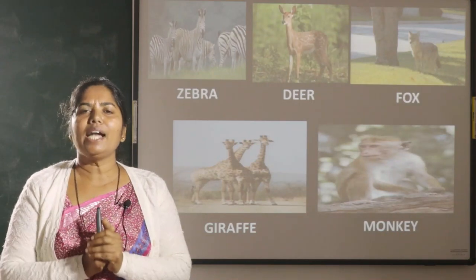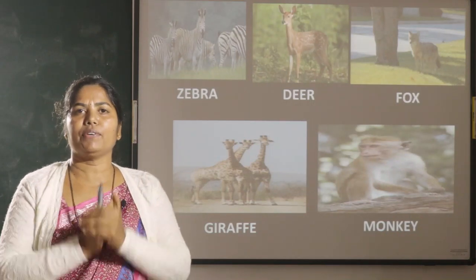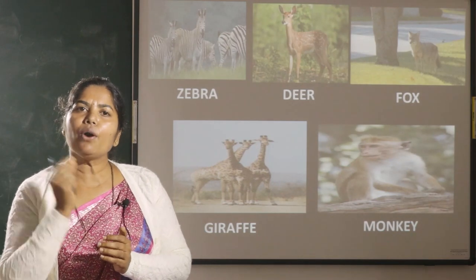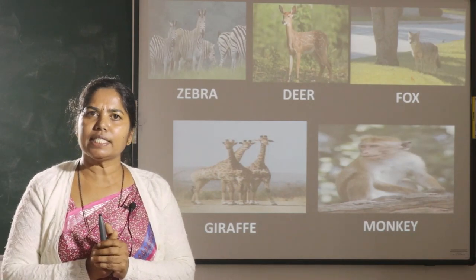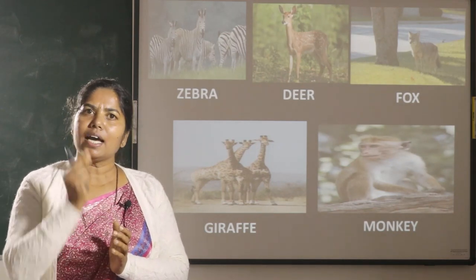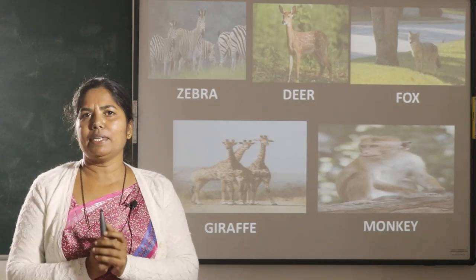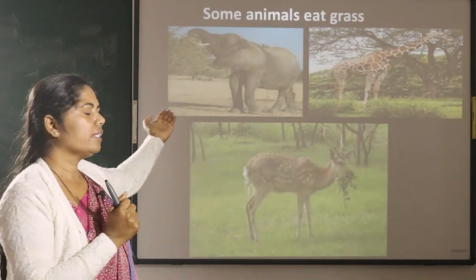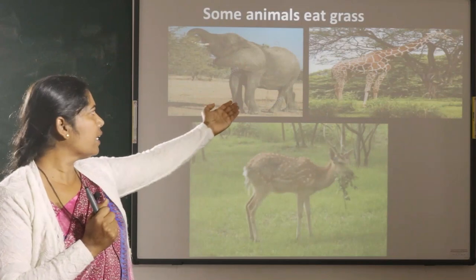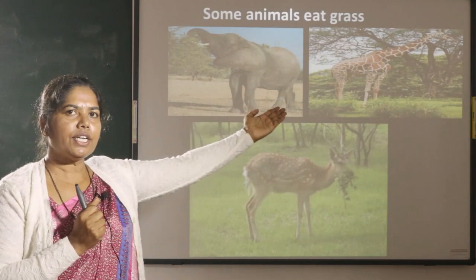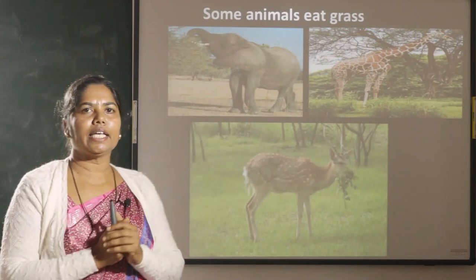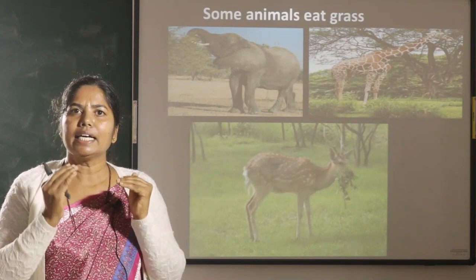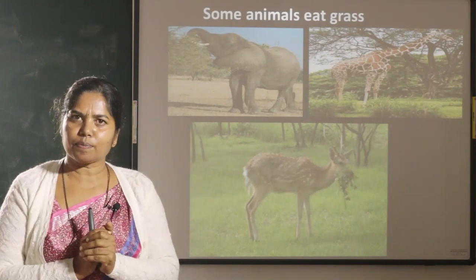Some of the wild animals are herbivorous. Do you know what's the meaning of herbivorous? Herbivorous means grass eating animals. For example, elephant, giraffe and deer. These animals eat grass and leaves.